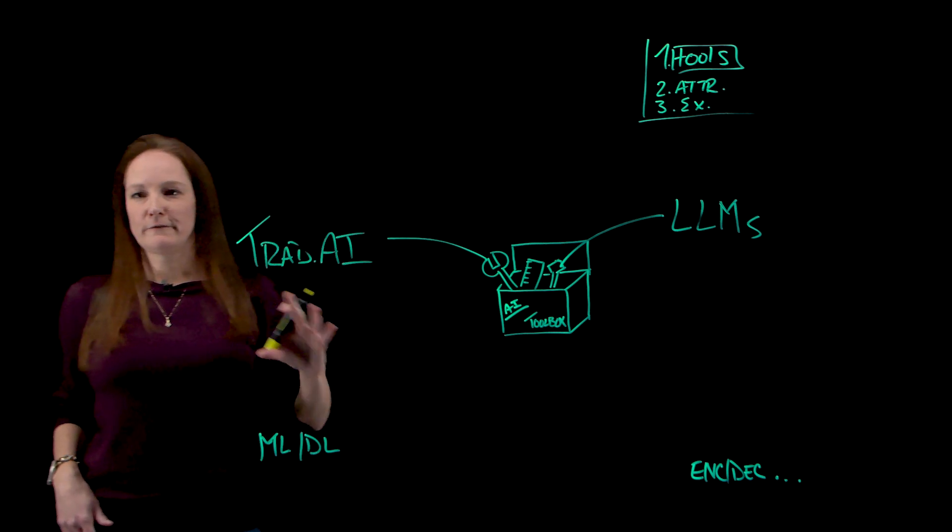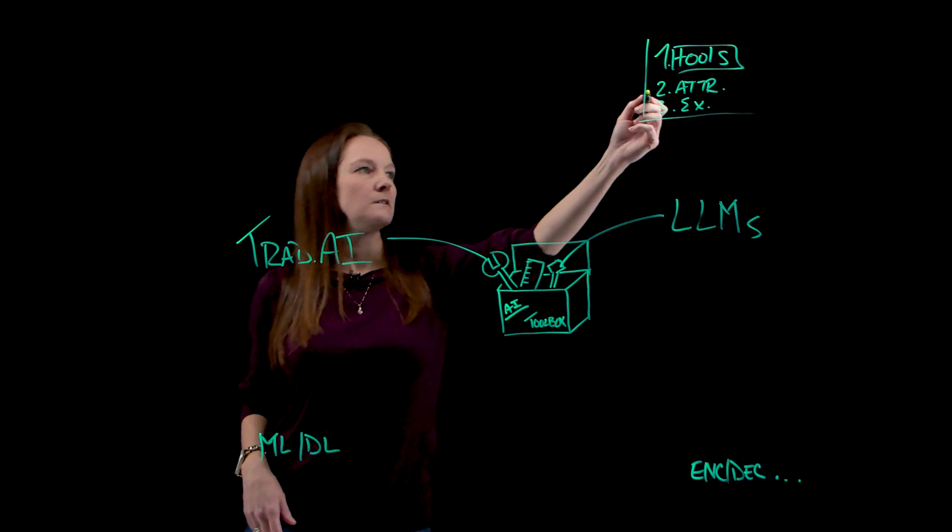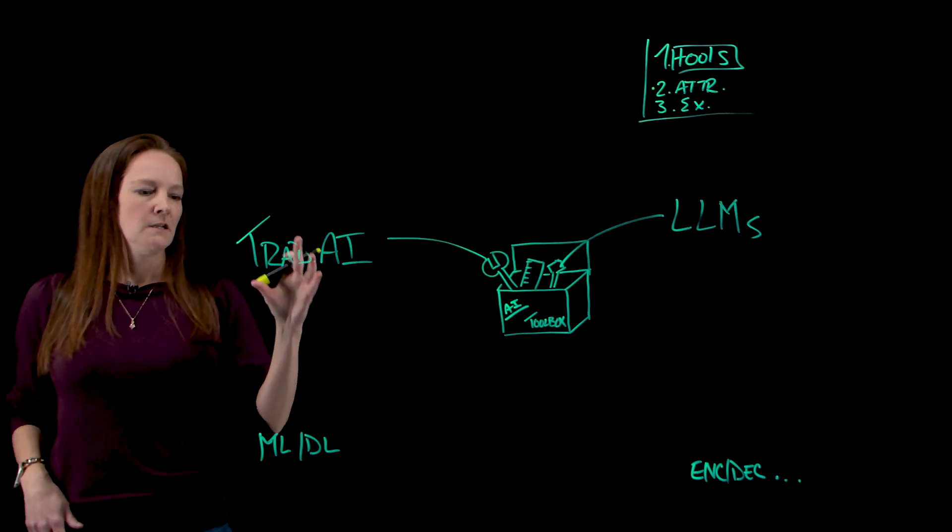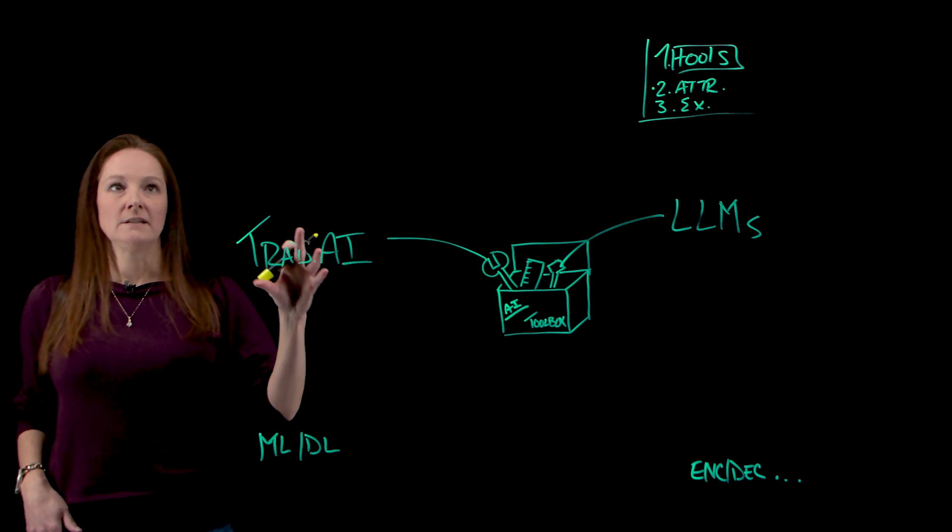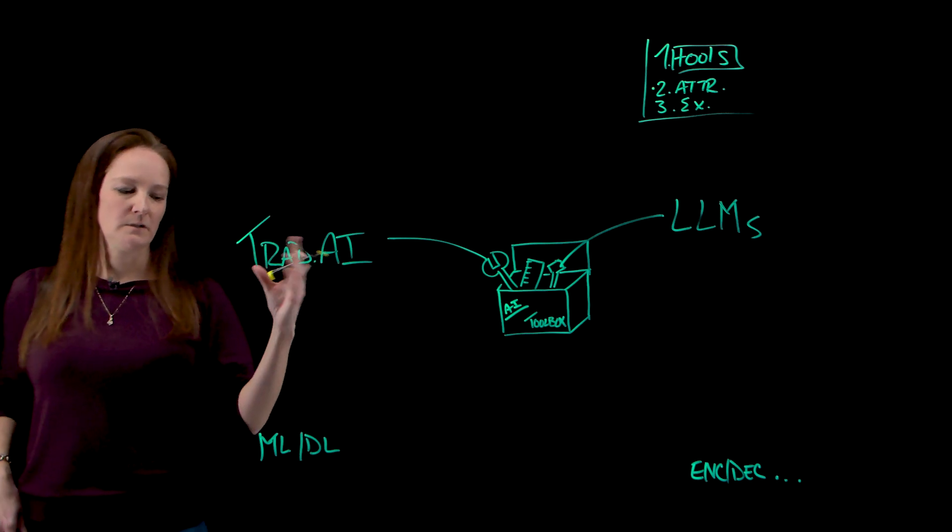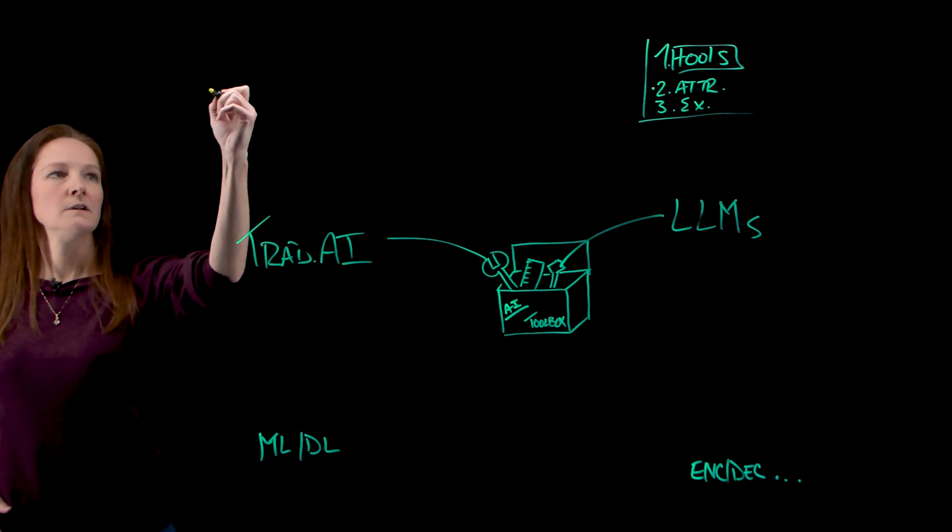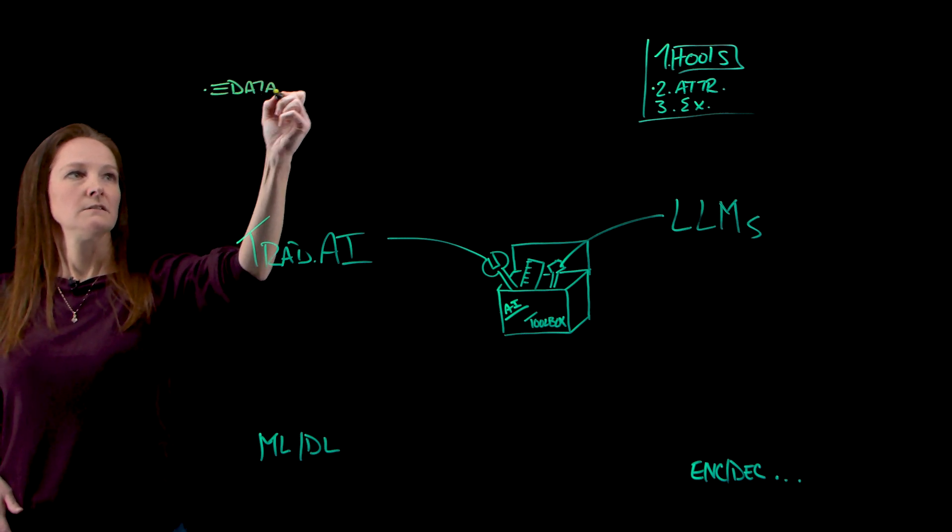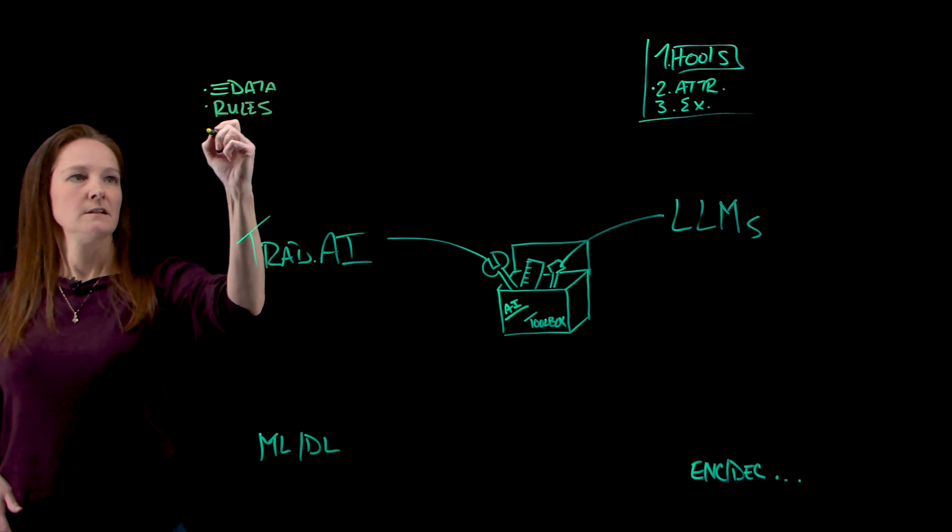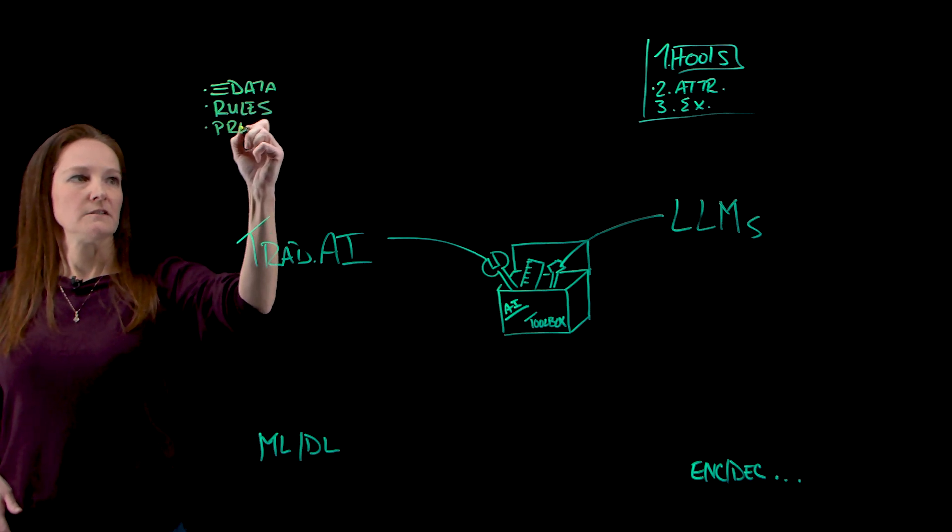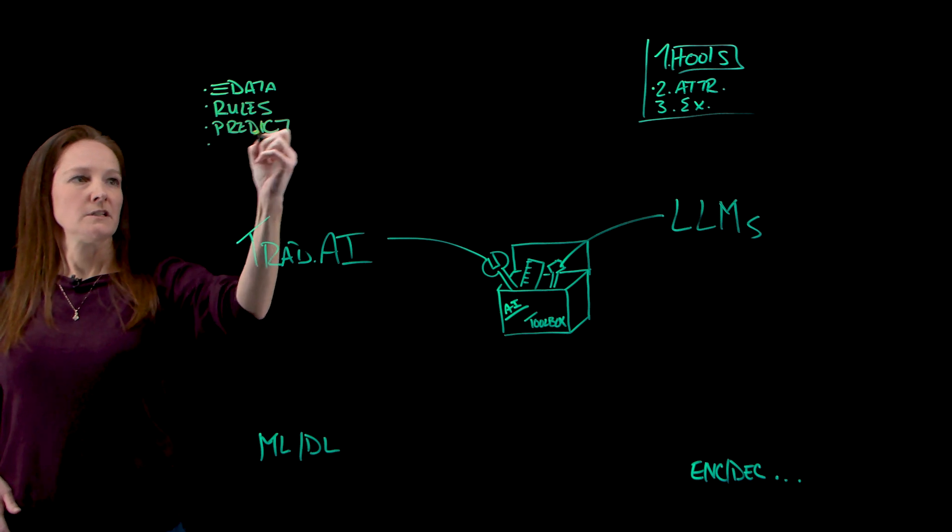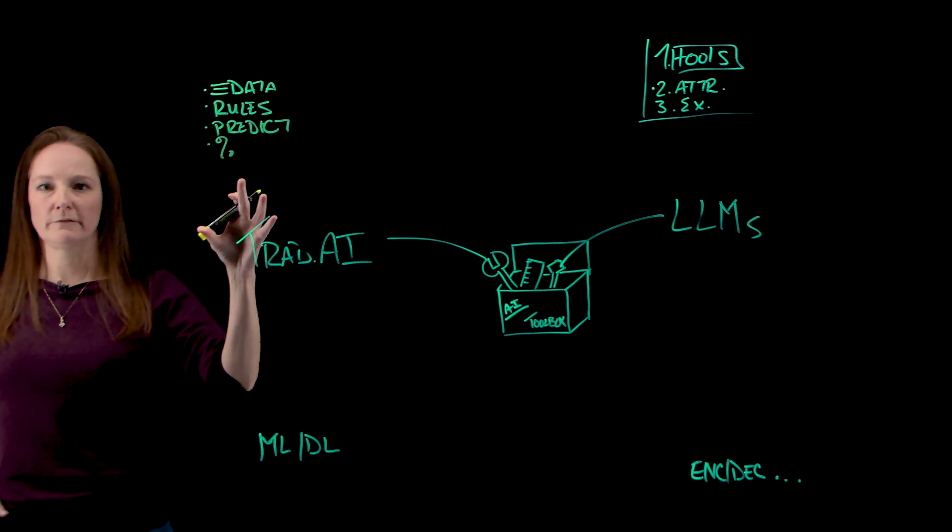So now that we have a framework of our tools, let's dive in a little further and talk about their different attributes. So traditional AI - in a very simplistic view, how does traditional AI work? It looks at structured data and then, following a set of rules, it makes a prediction. And along with that prediction, it gives you a confidence rating.